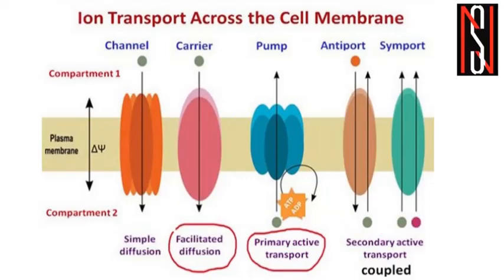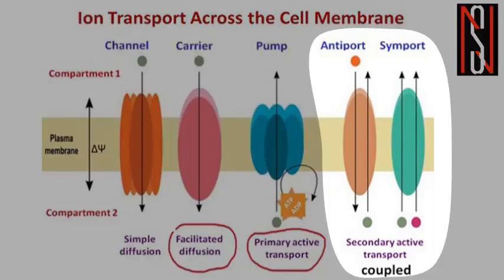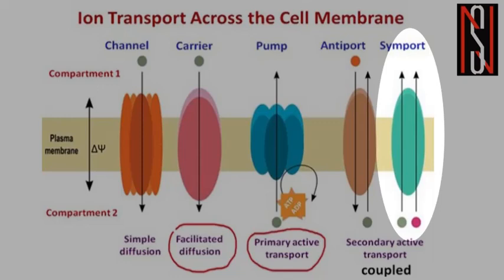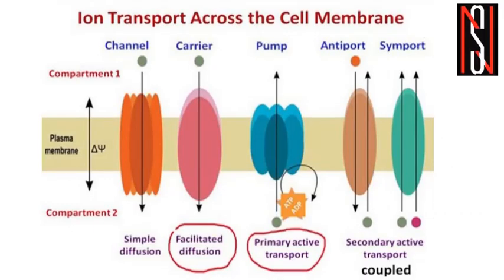Primary active transport is the process we already saw when discussing the sodium-potassium pump, where energy was provided by ATP hydrolysis — ATP being converted to ADP. There can also be another situation where two ions are energetically coupled with each other: either one goes out while the other comes inside the cell, or both go out or come inside together. This is called secondary active transport — the ions are energetically coupled with each other.